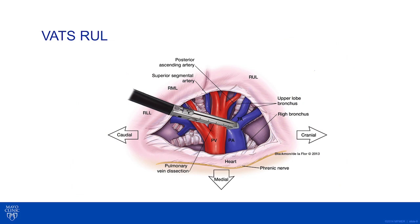The second step in a VATS right upper lobectomy involves flipping the lung back posteriorly and performing the rest of the surgery from front to back. The first portion involves dissection of the right upper lobe branches of the pulmonary vein. Once these have been encircled, stapled, and divided, the truncus anterior, posterior ascending pulmonary artery, and bronchial branches can easily be seen.